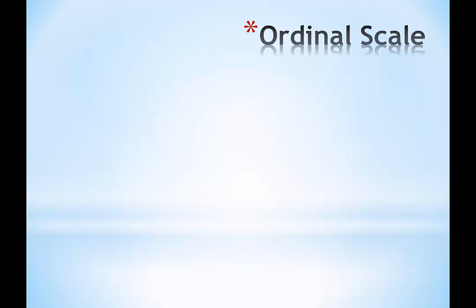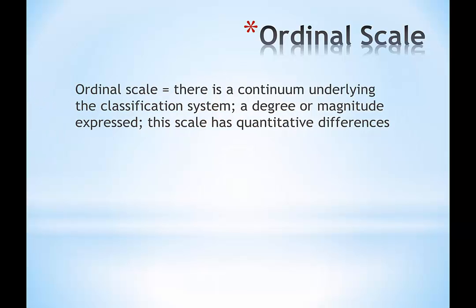The ordinal scale is the next rung up from the bottom. On the ordinal scale, there is a continuum, so the magnitude of the number does mean something. This scale has quantitative differences. The key thing to remember about the ordinal scale is that whenever you're dealing with rank order data — if I ask you to rank your best, second, and third favorite restaurant — that's ordinal data. Those numbers are meaningful, but the intervals aren't equal and ratios don't make sense.